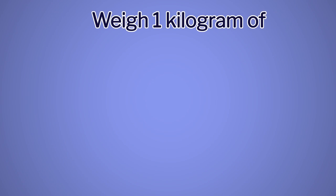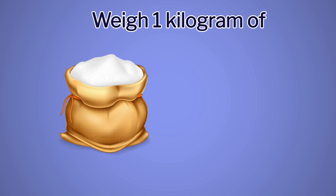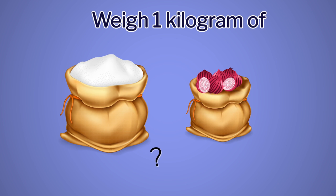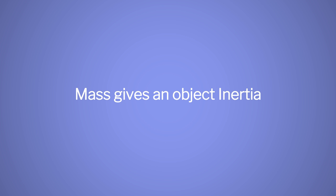Here we have one kilogram of cotton and one kilogram of onions. Can you tell whether the mass of both of them is equal or not? We can see that the mass of one kilogram of cotton and one kilogram of onion is obviously the same, even though their volumes are very, very different. Mass gives an object inertia. In the next activity, we will learn about inertia.